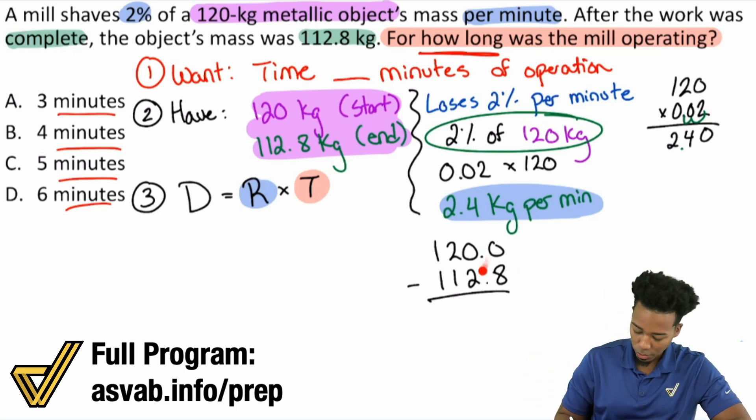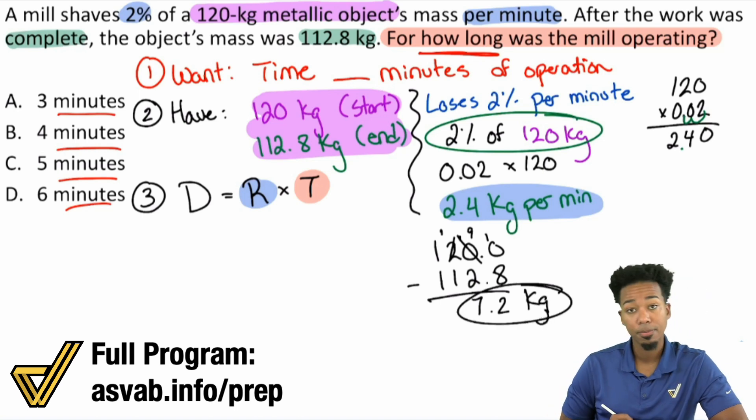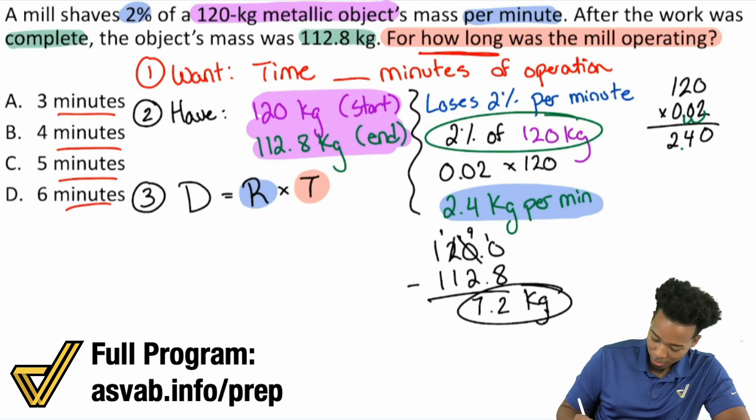But again, if you still need to go ahead and just subtract the normal way, you can. So here, what I'll do is I'll go ahead and borrow 1 to make that 10, then borrow again to make that a 9. 10 minus 8 is 2. 9 minus 2 is 7, 0, 0. So 7.2 kilograms is the distance. That is the distance. So there it is. We are all set math party people.